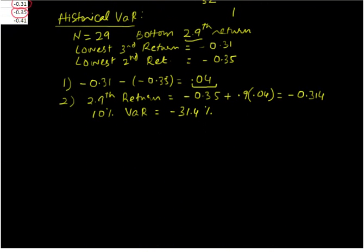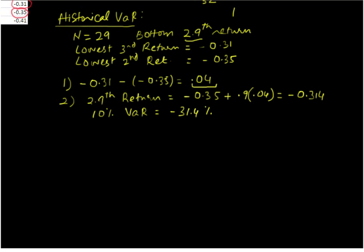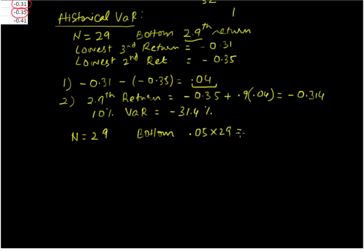Let us also find the historical VaR with 95% confidence — the 5% VaR. Our n is 29. For the 5% VaR we need to locate the bottom 5% of 29, which gives us the 1.45th return from the bottom.